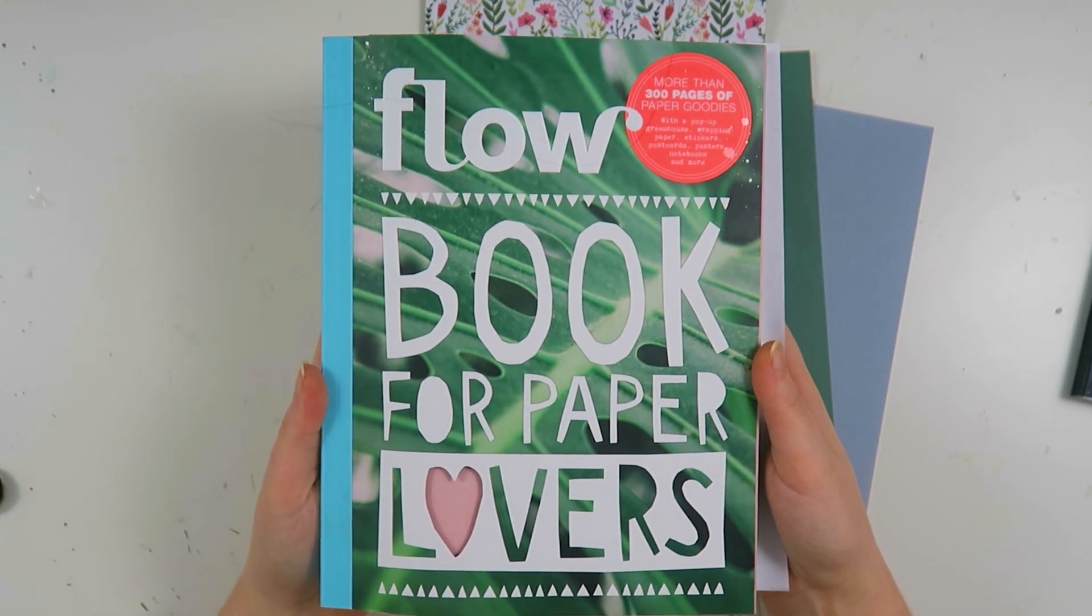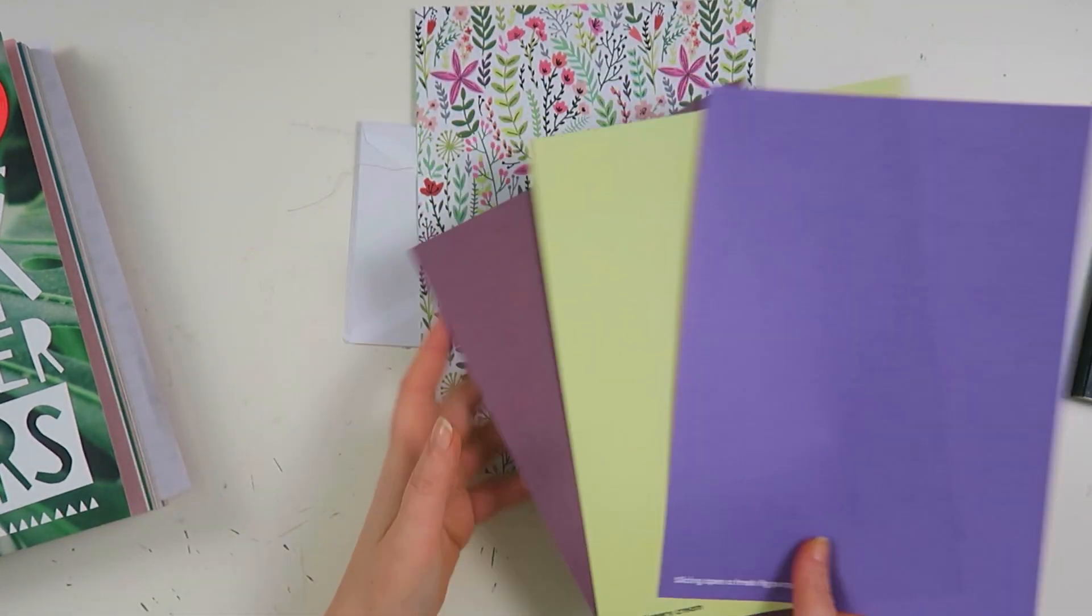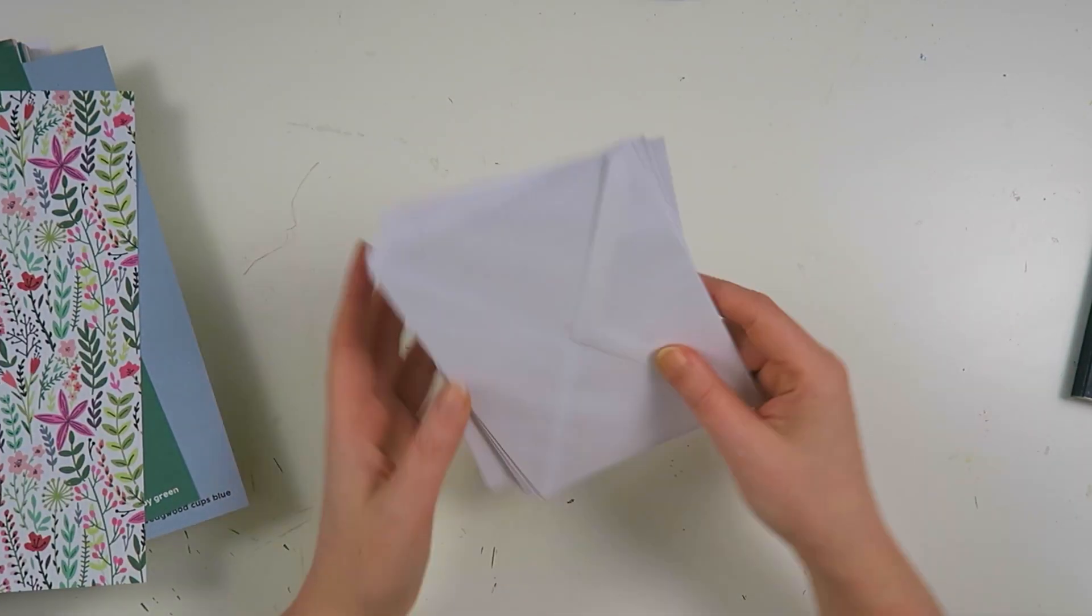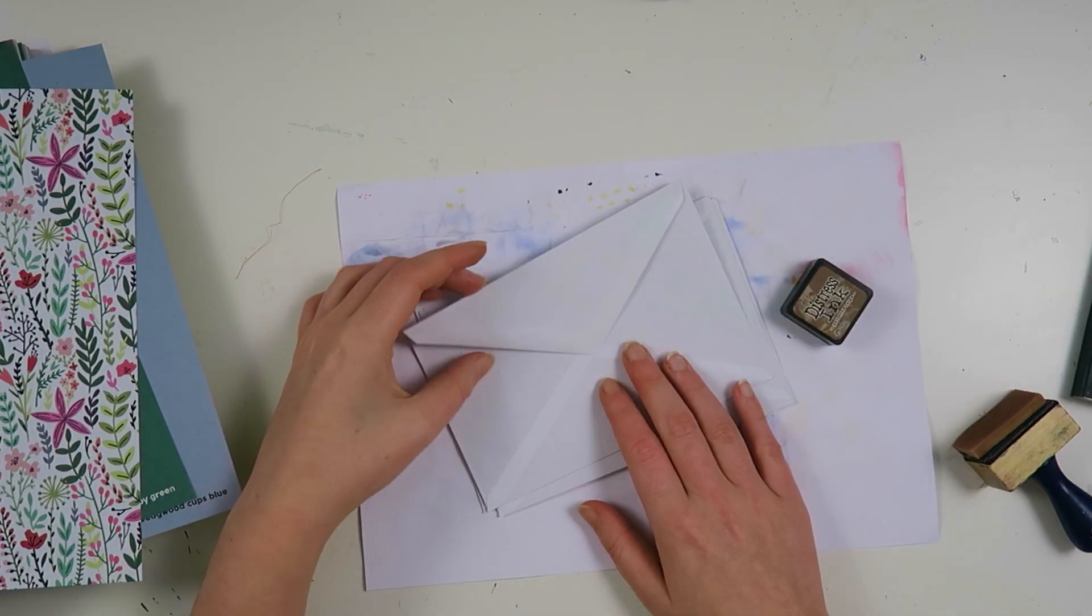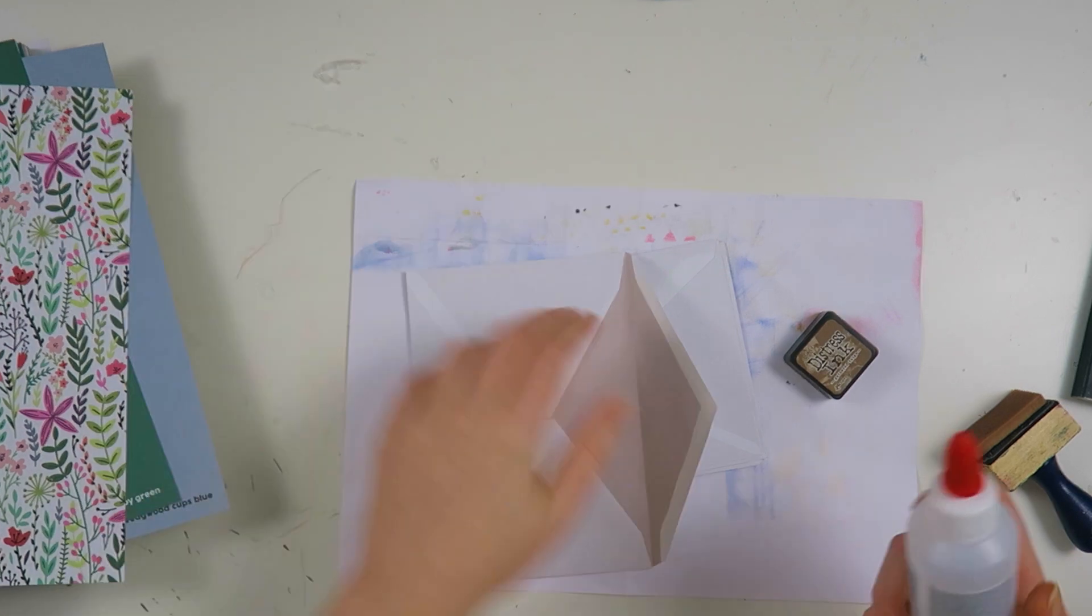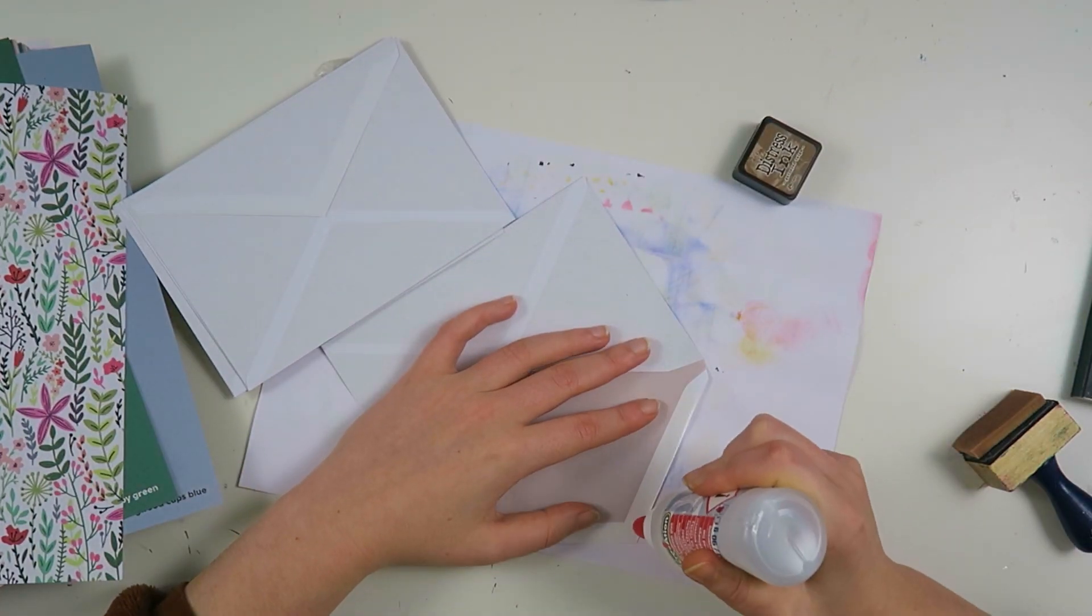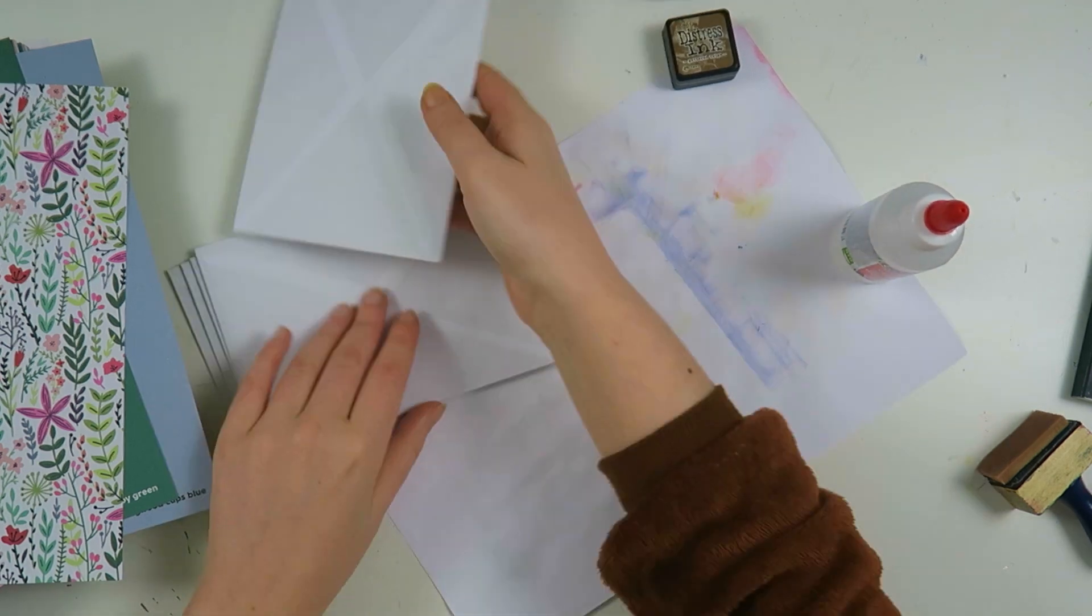Hello my creatives, today I'm here to share a happy mail video with you. This is an accordion folder I made for Avia. I'll first tell you what I'm doing - I have the flow book for paper lovers I'm using, and I have six standard sized envelopes that I'm gluing shut to start the base of my accordion folder.